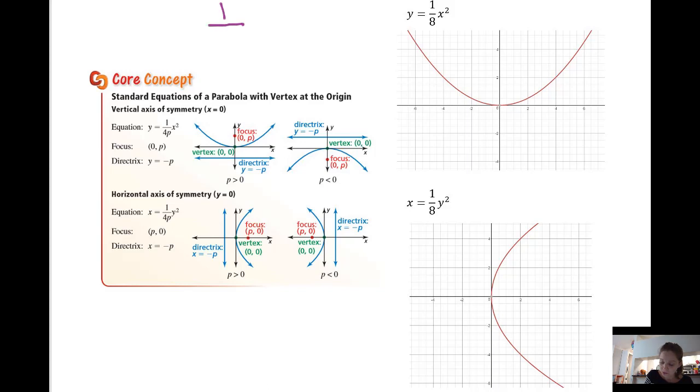So this coefficient of x squared, one-eighth, we need to figure out what p is if the standard coefficient is one over four p. You probably can see from here that p is going to be two. And if you don't, or as the problems get harder, how I recommend to calculate for p is to cross-multiply. You have a proportion here. Four p equals eight. Divide both sides by four, and you get that p equals two.